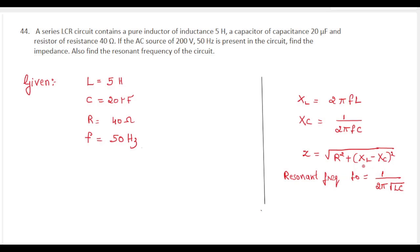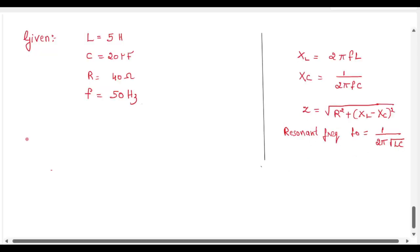Inductive reactance and capacitive reactance can be found using the formula: XL equal to 2 pi fL, and XC equal to 1 by 2 pi fC.